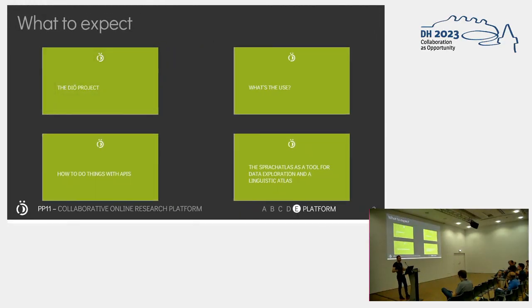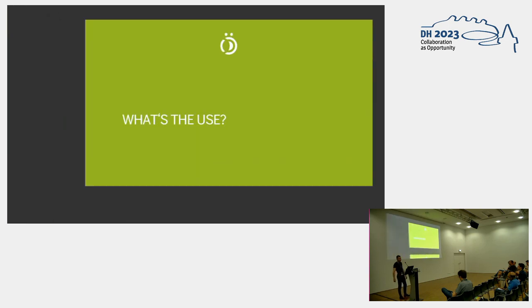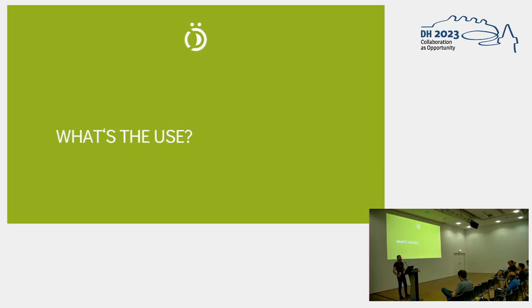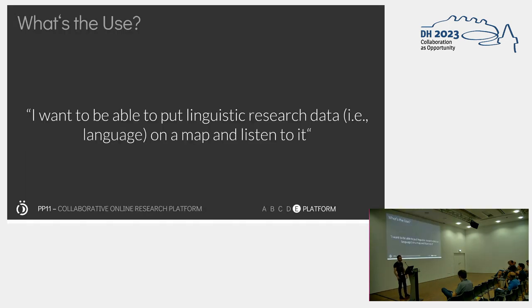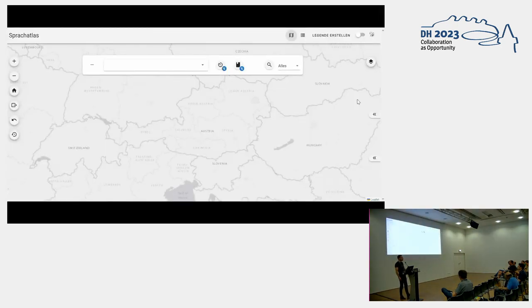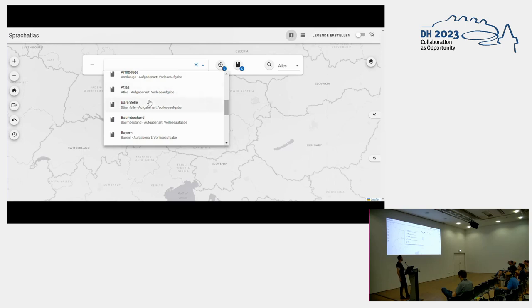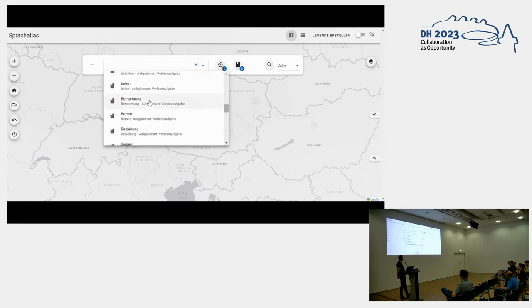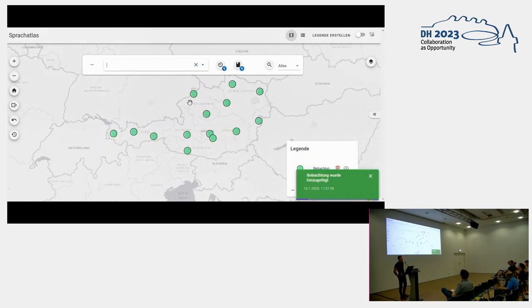So that's the data in the shortest possible way. I'm just going to show you what the Sprach Atlas actually does. The use case is: I have linguistic data, i.e. language, I want to put it on a map and ideally listen to it. This is what the tool looks like currently, and here you can see me doing exactly that — putting a data point on the map from a language production experiment.